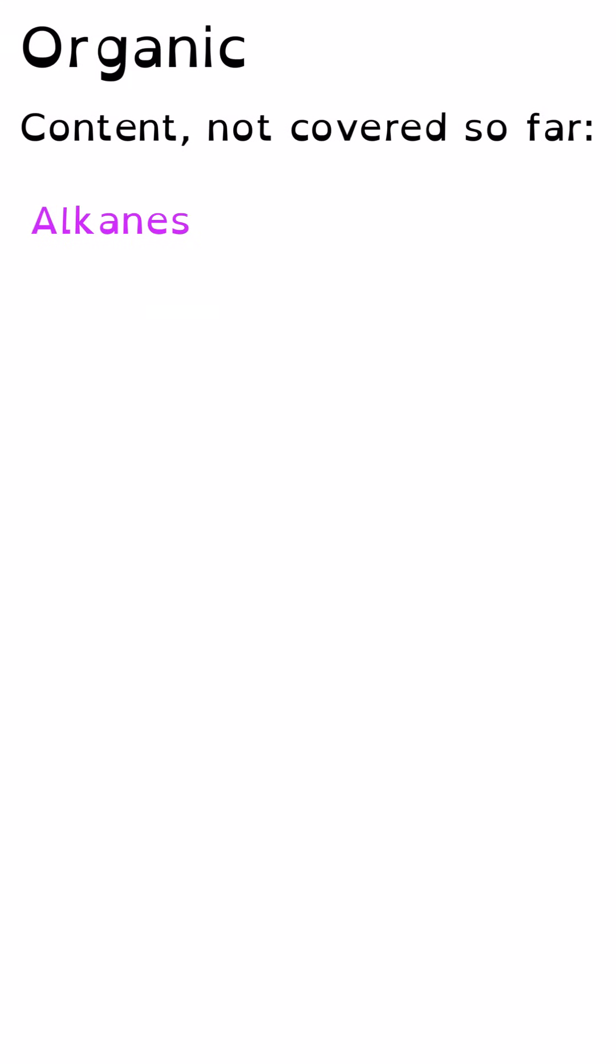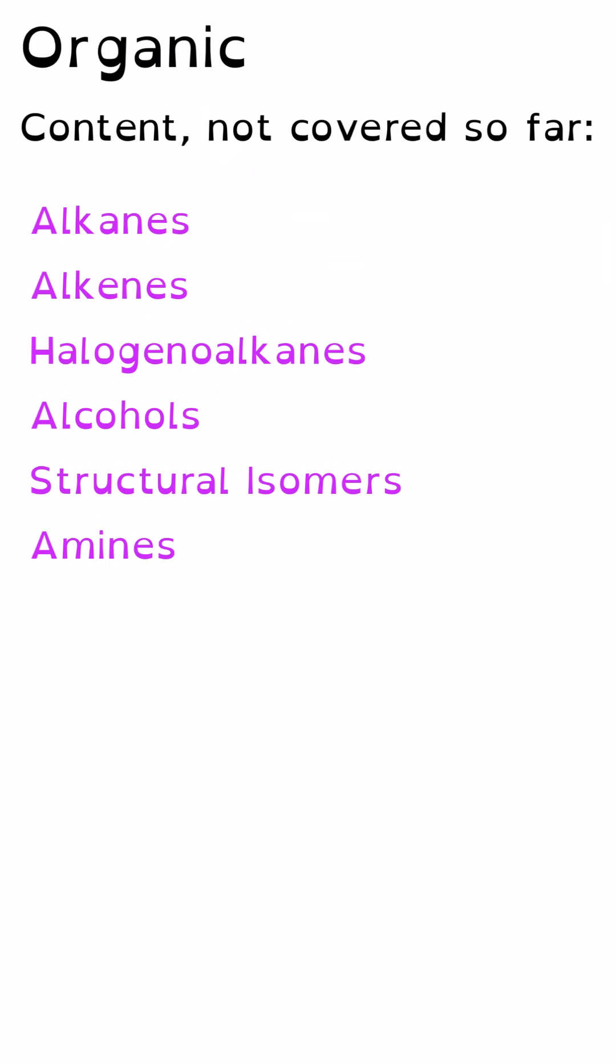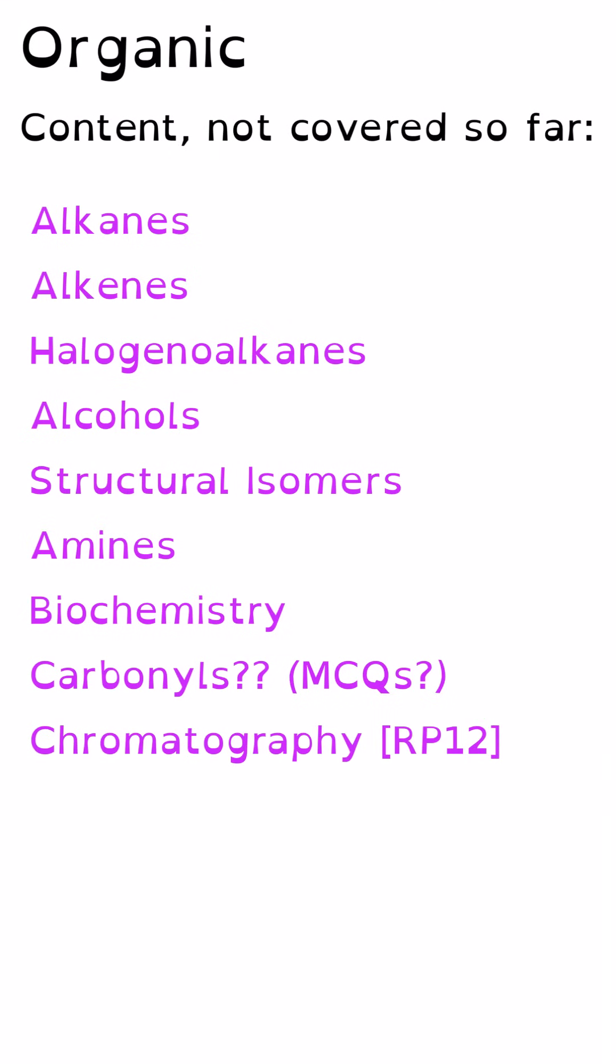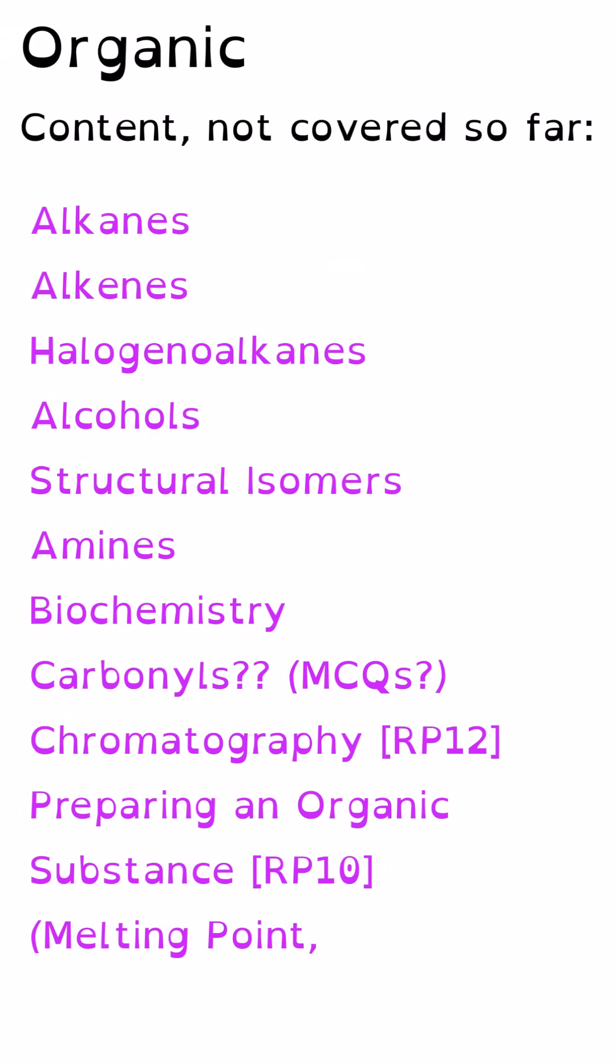If we take a look at the aspects of organic chemistry that were not assessed on paper 2 that can help us think about what might be on paper 3. So there was no alkanes nor alkenes on paper 2. Similarly no halogeno alkanes or alcohols and not really anything to do with structural isomers either. For year 2 chemistry there was nothing about amines and nothing about biochemistry. There was a little bit of carbonyls but not loads. In terms of required practicals relating to organic chemistry content there was nothing to do with chromatography. Neither was there anything to do with required practical 10 which is the preparation of an organic substance, so for instance recrystallization and melting point determination. There was basically nothing from year 1 in organic chemistry.